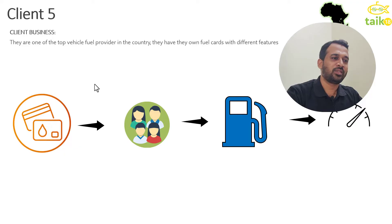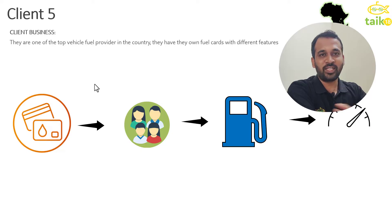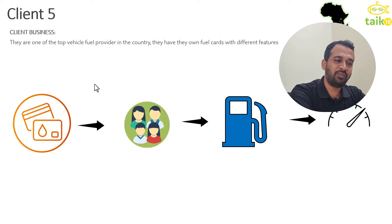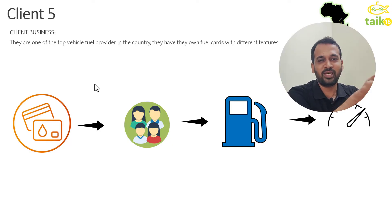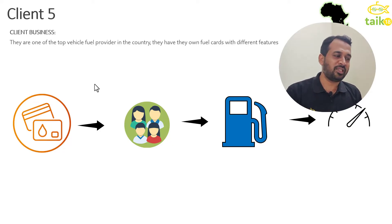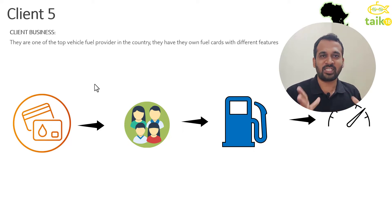Now, client number five. They are one of the top vehicle fuel providers in the country and they have their own fuel cards with different features — multiple fuel cards like what we get from our banks with multiple credit card options. They sell these cards to customers who can refuel whenever they want, and they want to monitor all those activities, the card status and the customer status.